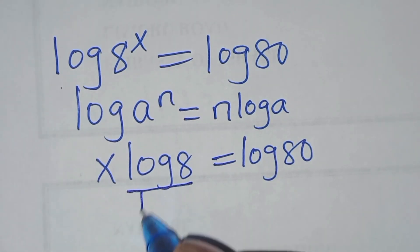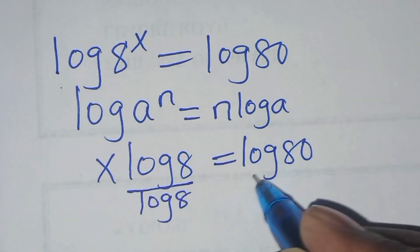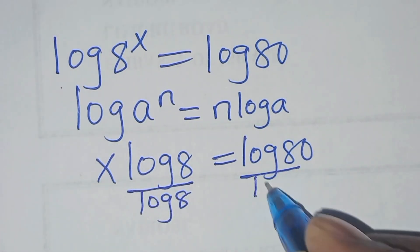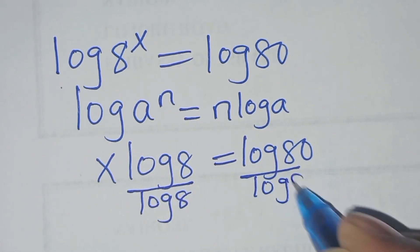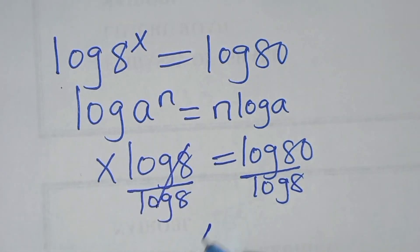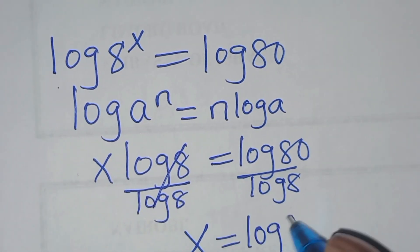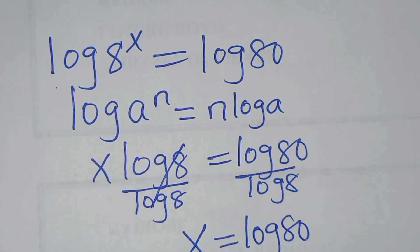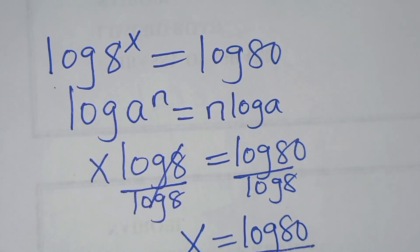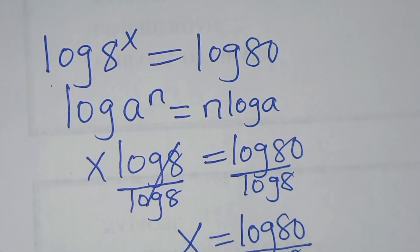So for the value of x here, let's divide both sides by log 8, so that we will have x is equal to log 80 divided by log 8.